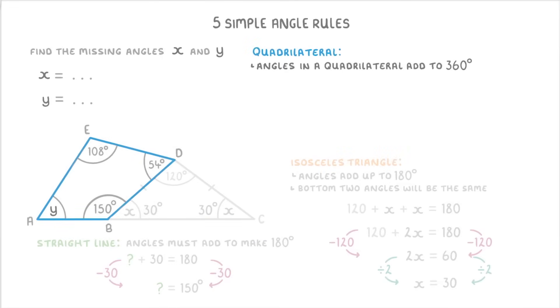And lastly, now that we know three out of the four angles in the quadrilateral, we can write it out as 108 plus 54 plus 150 plus y equals 360. Or 312 plus y equals 360. So y equals 48 degrees.